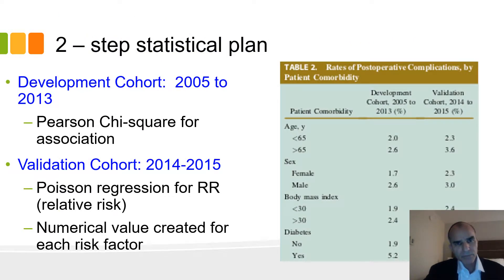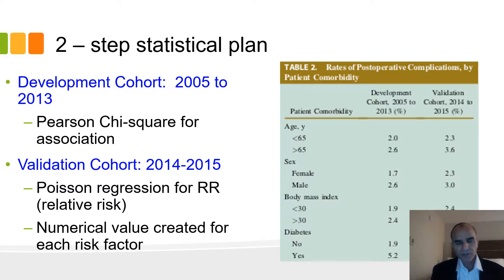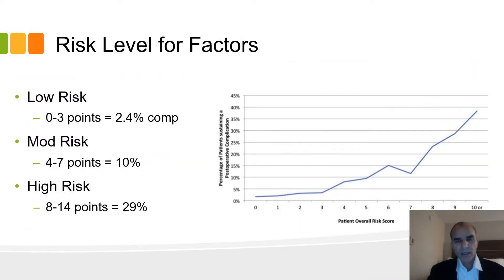They did a two-step plan. From 2005 to 2013, they used a chi-square for association between variables and complications. Then they did a validation cohort for the two-year period from 2014 to 2015, looking at what variables were actually related, what was their relative risk, and how each was weighted. What they found — skipping to the bottom line — was that factors were nicely categorized based on risk.